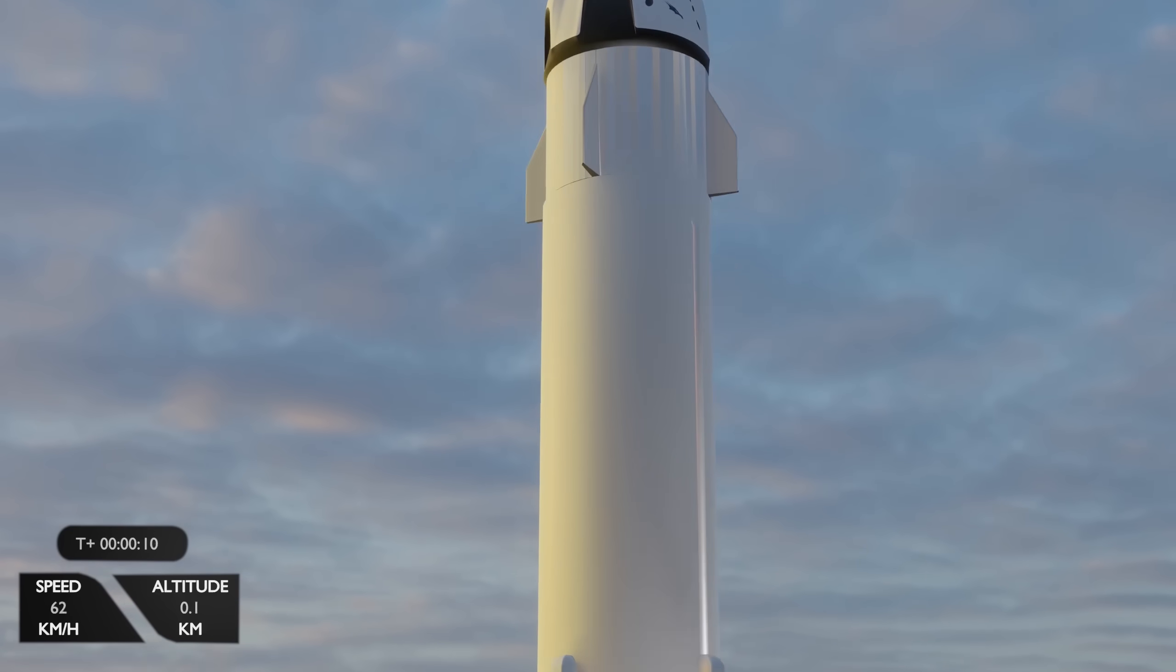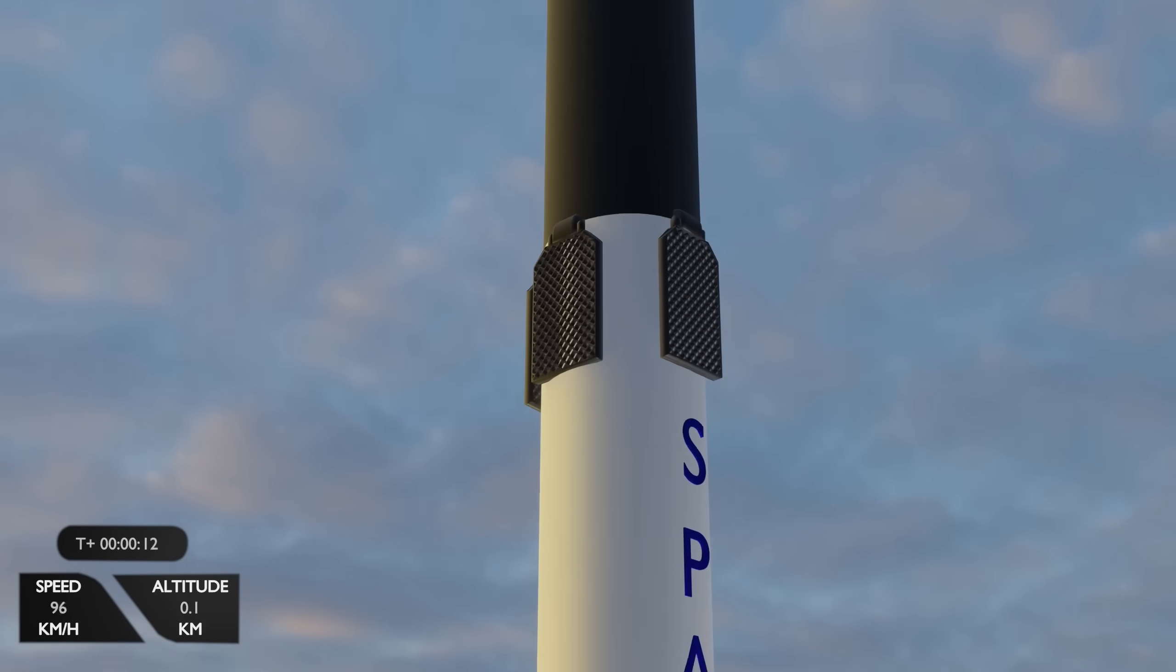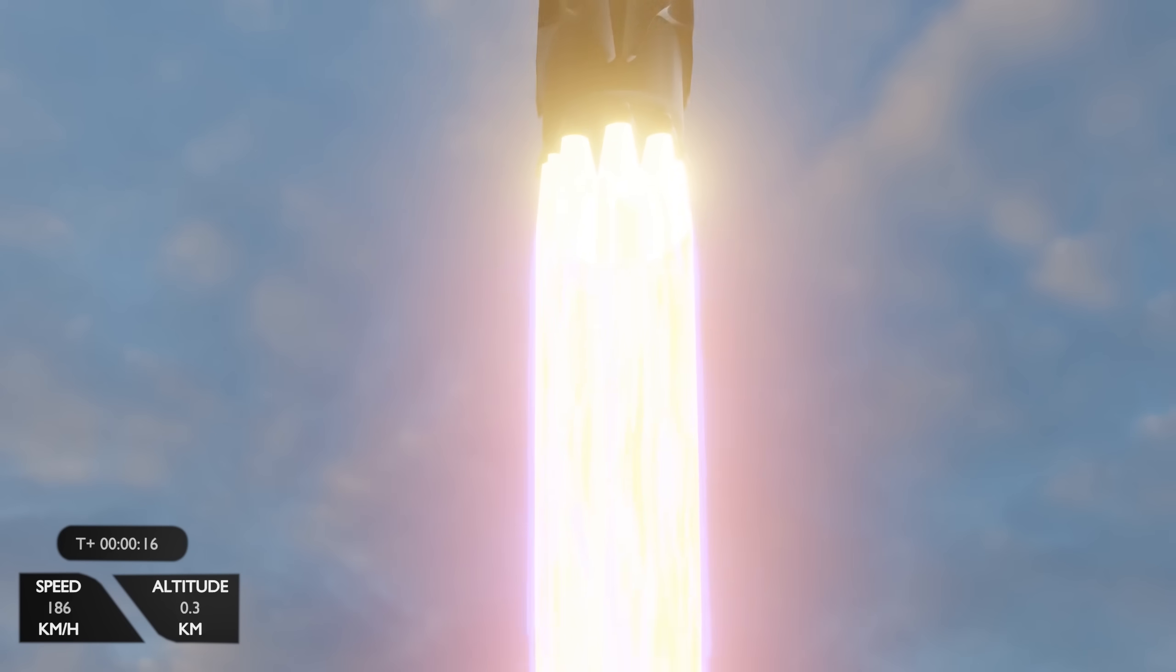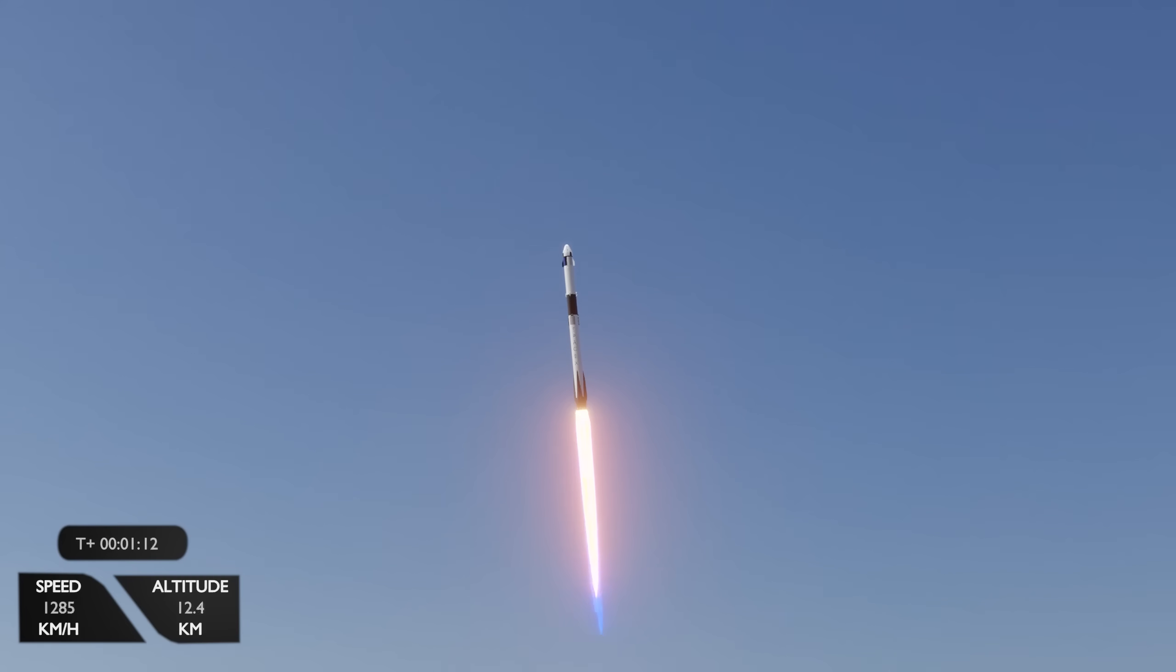Within seconds, the rocket has cleared the tower and begins accelerating at a blistering rate fighting the dense atmosphere. Just over one minute into the flight, the rocket is already at cruising altitude of passenger jets and going 20% faster. Now that the atmosphere is only 15% as dense as it is at sea level, a very unique physical phenomena is evident.